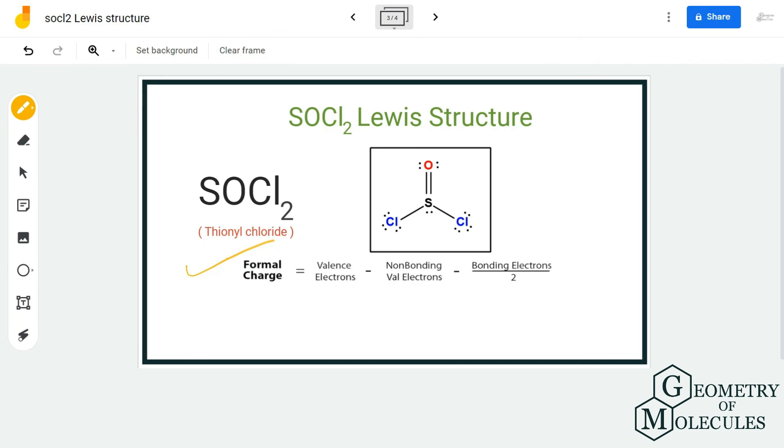Now this is the Lewis structure for SOCl₂ in which sulfur forms single bonds with both the chlorine atoms and a double bond with oxygen atom.